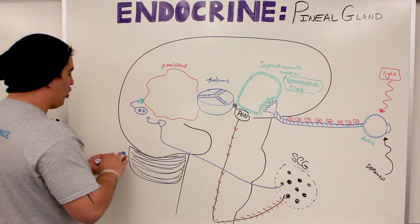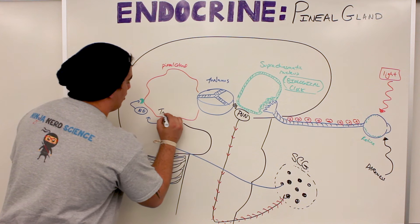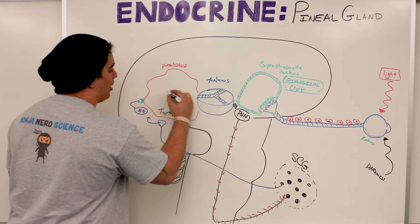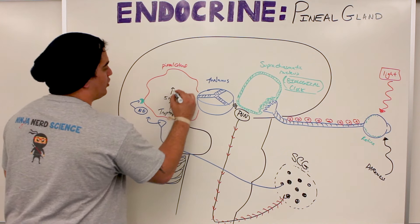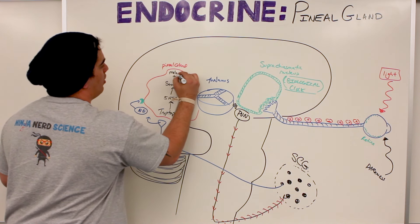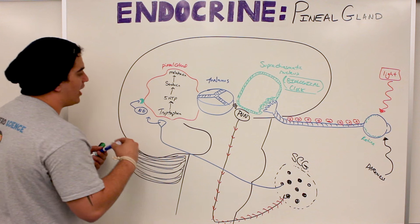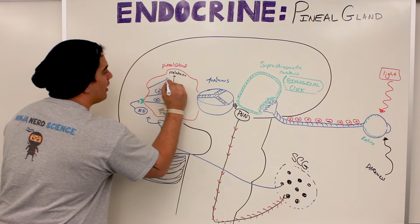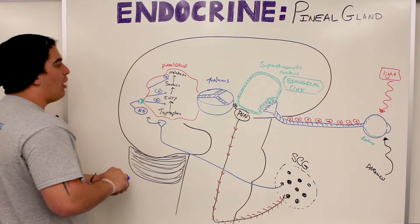What is the overall purpose? There's what's called tryptophan. Tryptophan gets converted into 5-hydroxytryptamine, which gets converted into serotonin, and then serotonin gets converted into melatonin. Norepinephrine is stimulating these intracellular pathways to drive this whole conversion — ultimately stimulating the synthesis of melatonin.